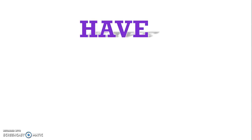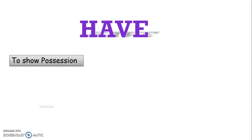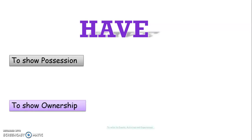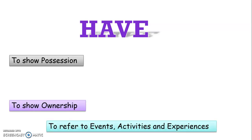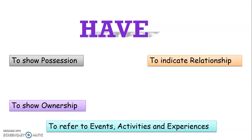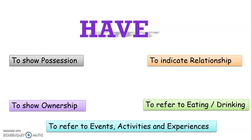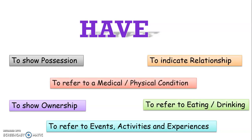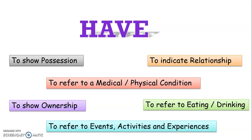Have has 6 multiple uses. They are: to show possession, to show ownership, to refer to events, activities and experiences, to indicate relationship, to refer to eating or drinking, and to refer to physical and medical condition.